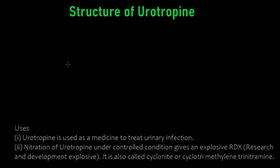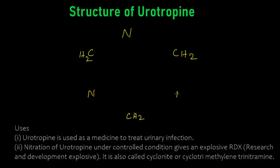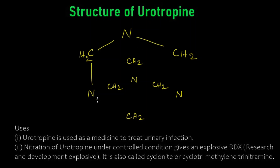The structure of urotropin has six CH2 molecules and four nitrogens, all arranged in a cage-like manner. Nitrogen here, CH2, CH2 — somewhat like a benzene ring but different. Nitrogen here, CH2 here, nitrogen to this, then CH2, CH2, nitrogen, CH2, CH2 — the remaining groups get attached in this manner.